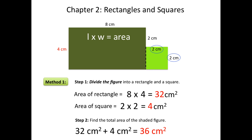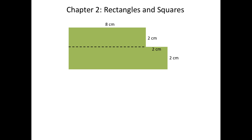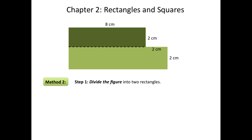Frequently, there's more than one way to find the area of a composite shape. In method 1, we found the area by dividing the figure into a rectangle and a square, and then adding them together. We could also find the area by dividing the figure into two rectangles. We could view this figure as one rectangle, shown here in dark green, and one larger rectangle, shown here in light green. We can find the area of these two shapes and then add them together to find the total area. You can see this method is very similar to method 1 — the only difference is that we're dividing the figure differently.